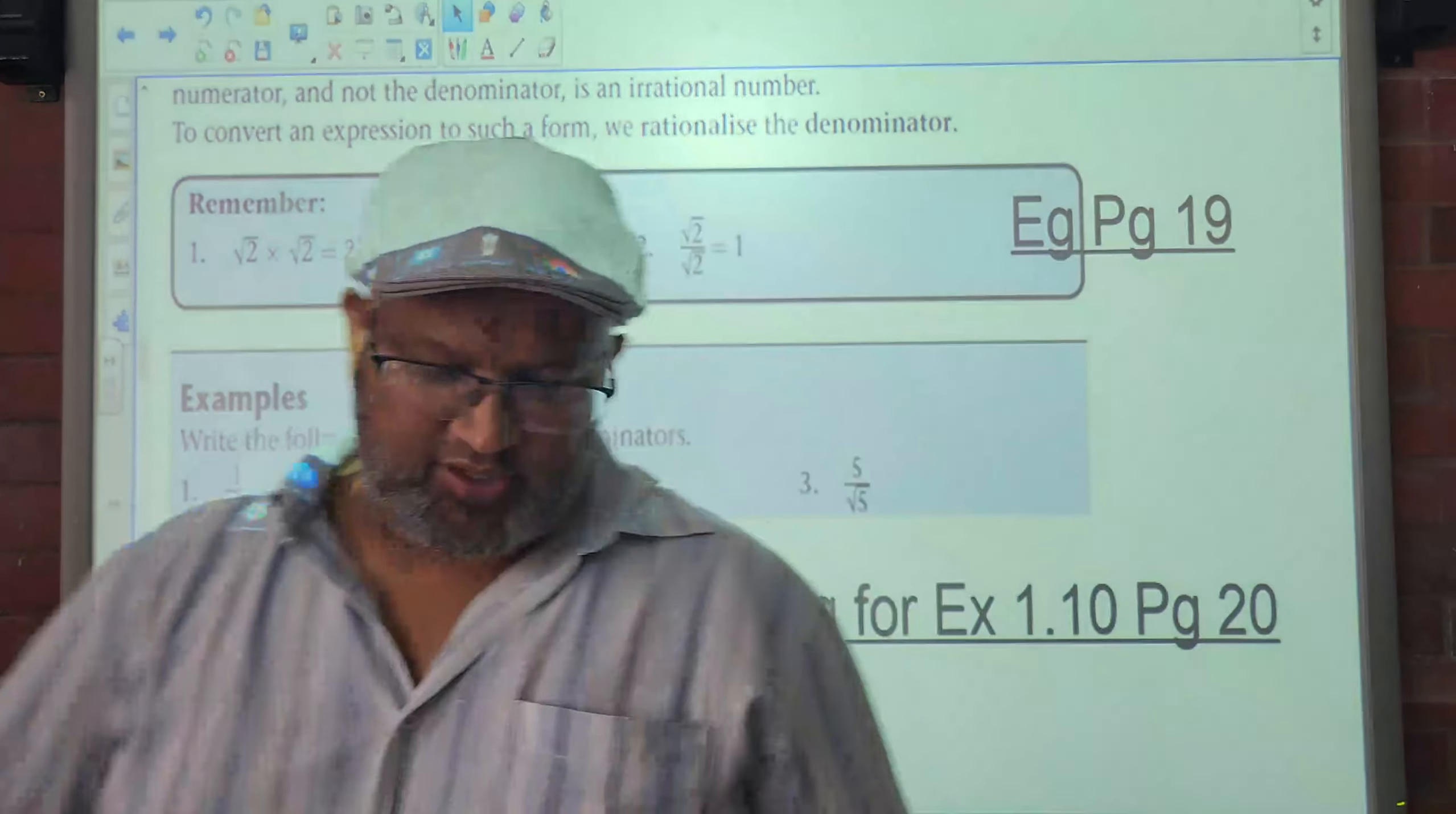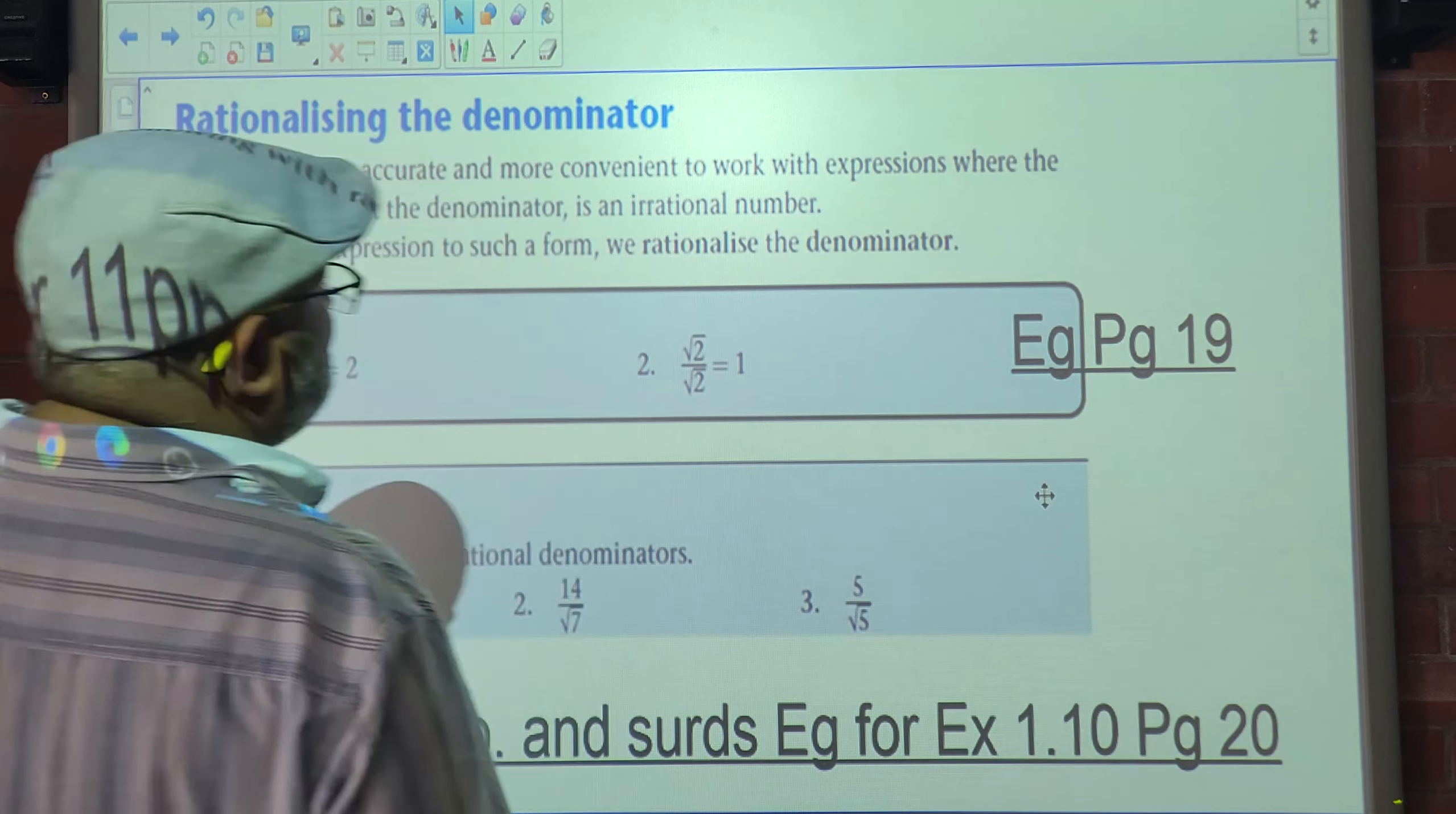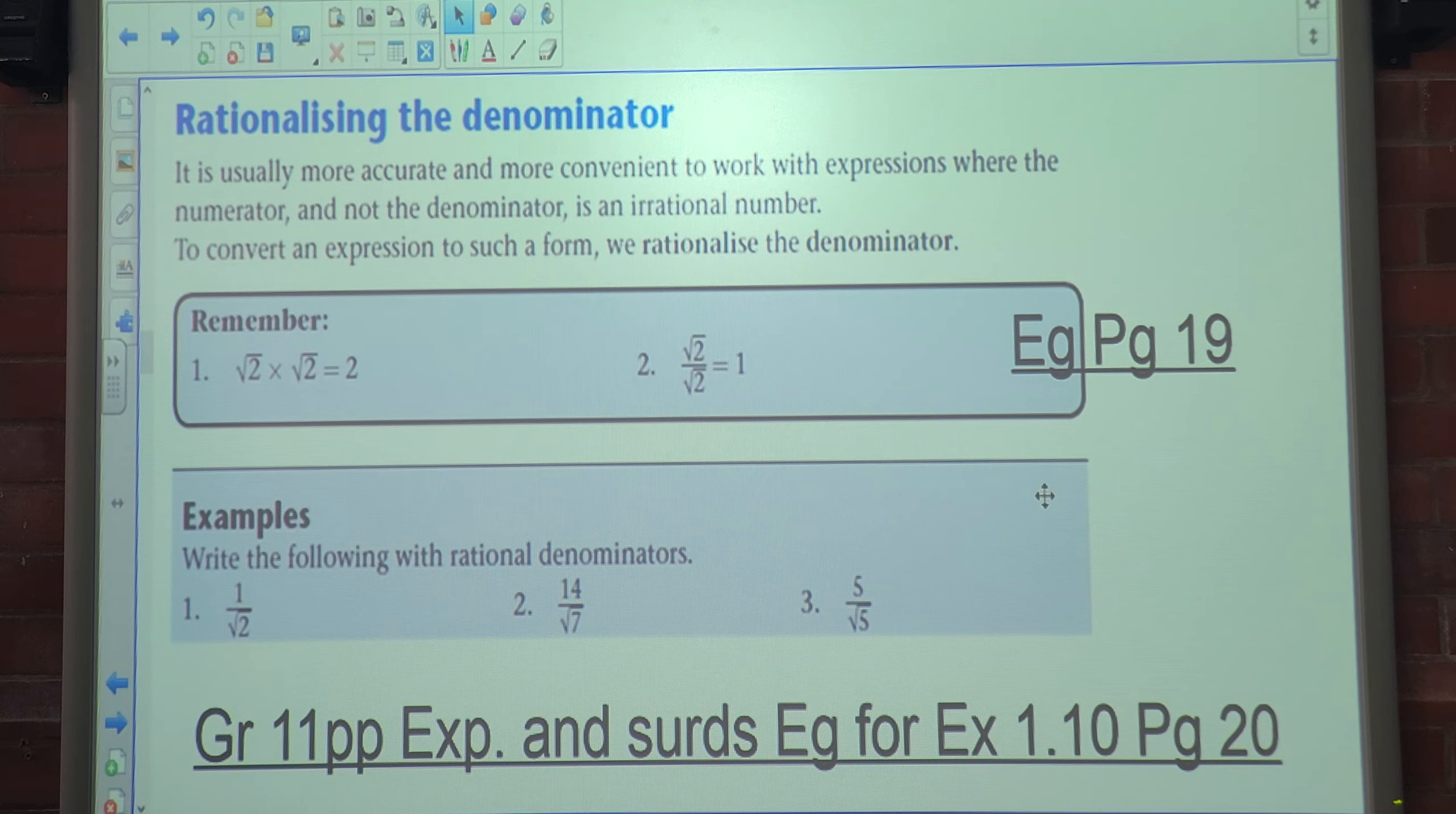Okay, so we're looking at rationalizing the denominator. It is usually more accurate and more convenient to work with expressions where the numerator and not the denominator is an irrational number. To convert that expression to such a form we rationalize the denominator.